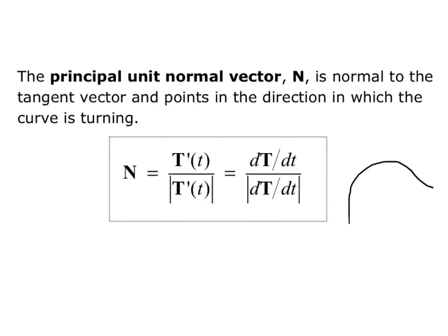If I have some random curve in three dimensions, the unit tangent vector capital T is going to point in the direction of the curve and have a length of 1. The unit normal vector will point into the curve and have a length of 1, and they will be at a 90-degree angle to each other. So if my curve was a circle, the unit normal would be pointing into the circle, towards the center.